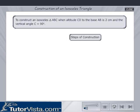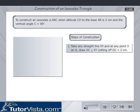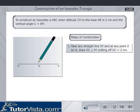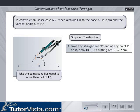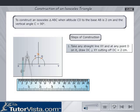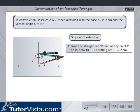Steps of construction are as follows: Take any straight line XY and at any point D on it, draw DC perpendicular to XY, cutting off DC equal to 2 cm.